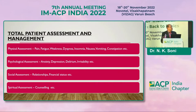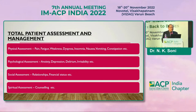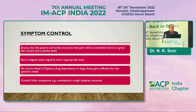Total patient assessment and management must be done: physical assessment for pain, dyspnea, insomnia, nausea, and vomiting — whatever symptoms the patient is having in the terminal stage. Psychological assessment for anxiety, depression, and delirium should be done. Social assessment — relationships with family members and even financial status — should be taken into consideration. Spiritual assessment and counselling must also be done for these patients.